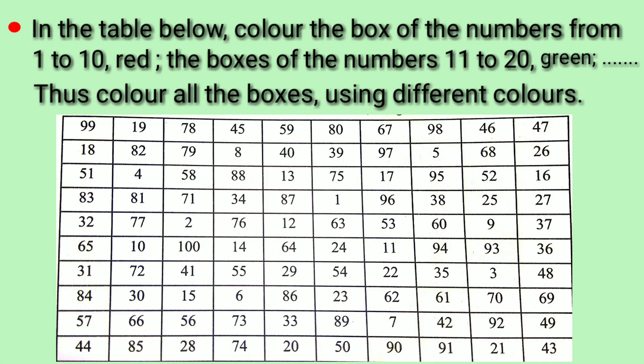Students, solve the problem in the table below. Colour the box of the numbers from 1 to 10 red, the box of the numbers 11 to 20 green. Just colour all the boxes using different colours. So students, open your textbook and colour the numbers.